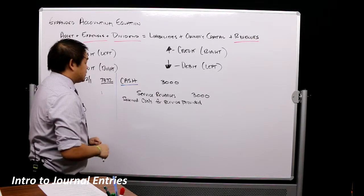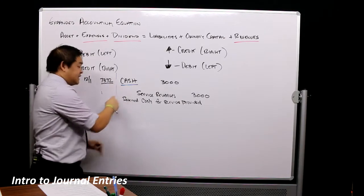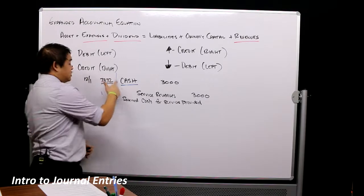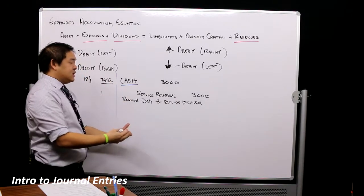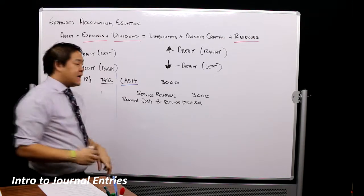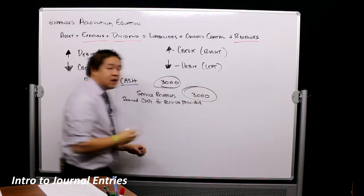You could have an instance where you might have one debit and two credits, five debits and five credits, two debits and one credit. So you're going to have a mixture of these. The main thing to understand is all your debits must equal all of your credits.